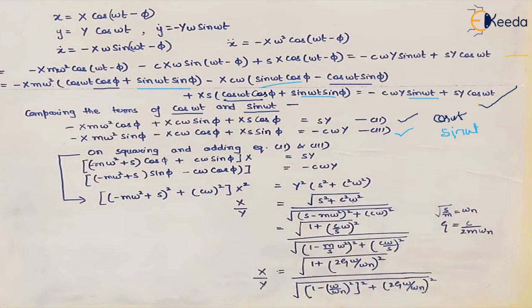In the second equation we factor out cos φ, and in the third we factor out sin φ. Squaring and adding these two equations eliminates φ, since cos²φ + sin²φ = 1. This gives an expression for X/Y. Using the relations ωₙ = √(s/m) and ζ = c/(2m ωₙ), we reduce the ratio X/Y into a compact non-dimensional form.